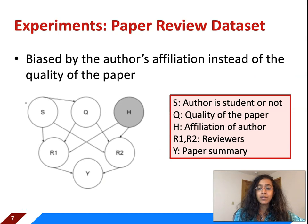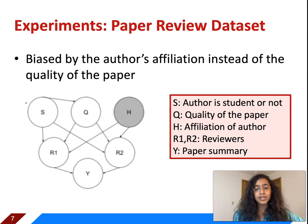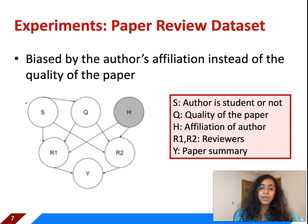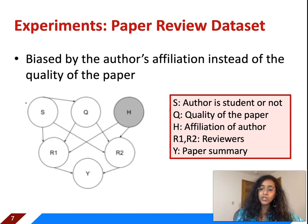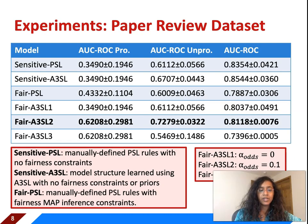We conduct experiments on three different scenarios; I'll be presenting two of them here — please see the paper for the third. The first is the paper review dataset, a synthetic dataset intentionally biased by author affiliation rather than paper quality. The variable h gives the affiliation of the author, and we can see that it affects reviews r1 and r2 and the outcome y when it should not, allowing us to study the effect of bias on the constructed model.